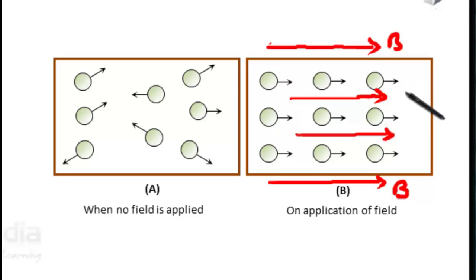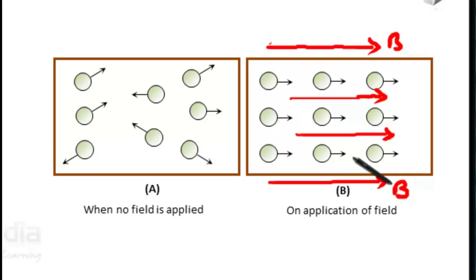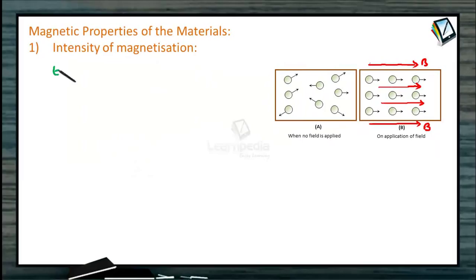The degree of alignment also increases if the temperature is decreased. With a sufficiently strong field, alignment is near perfect — we then say that the material is magnetized or magnetically saturated. When the atomic dipoles are aligned partially or wholly, there is a net magnetic moment in the direction of the field in any small volume of the material. Thus, magnetization is defined as magnetic dipole moment per unit volume.